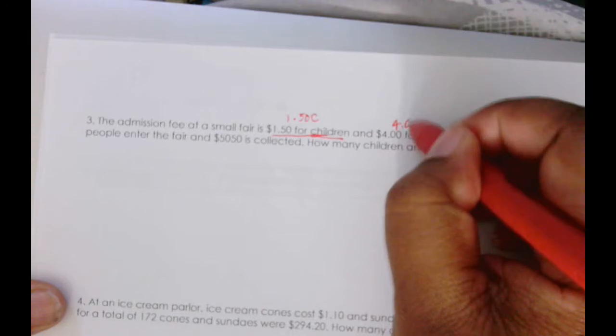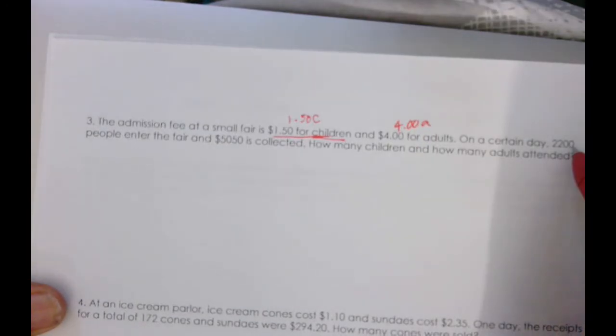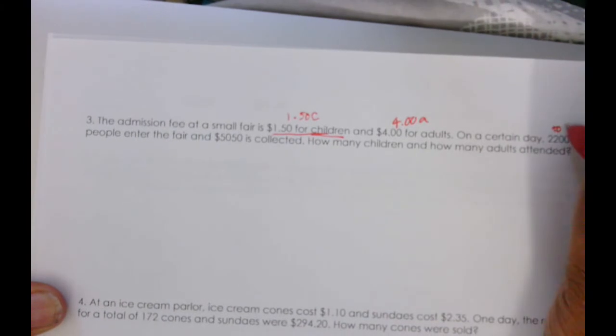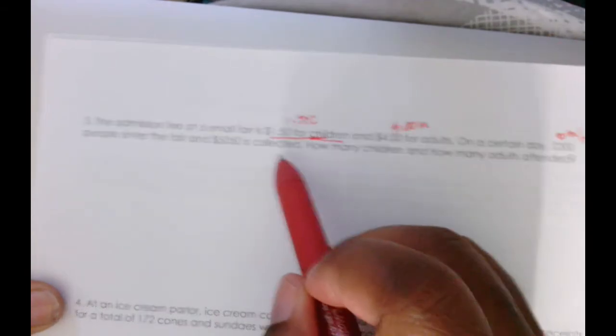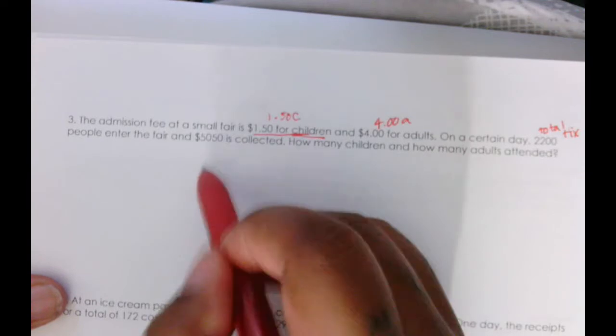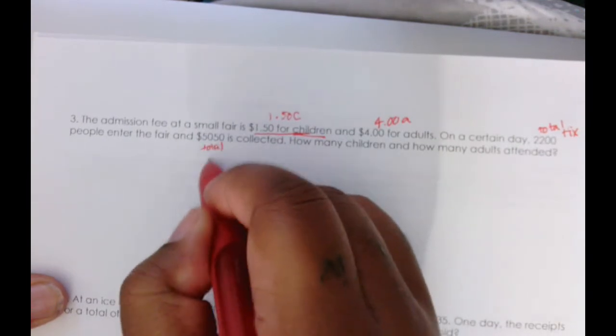On a certain day, 2,200 people enter, so this is how many tickets are sold. This is total tickets. And then they also make $5,050. This is total money.